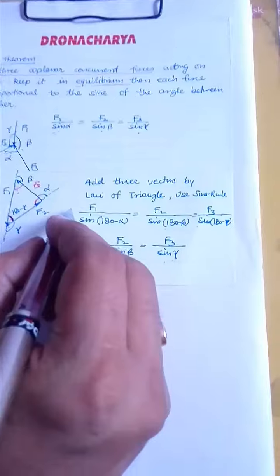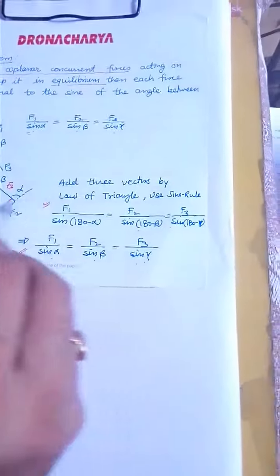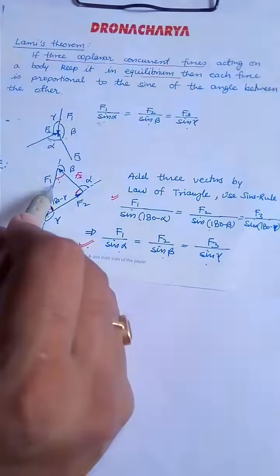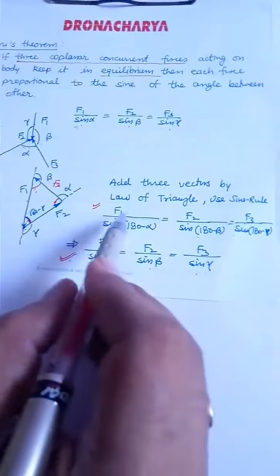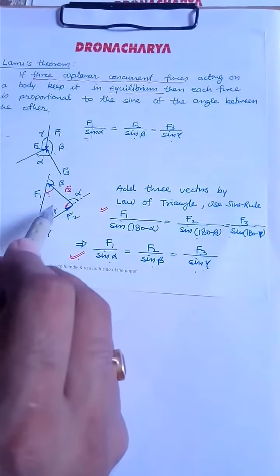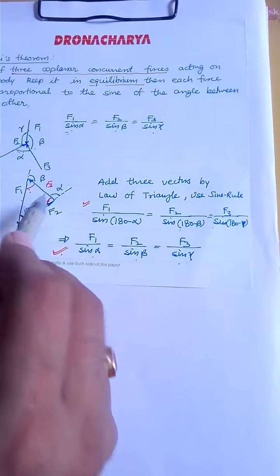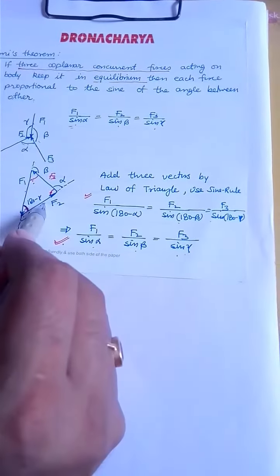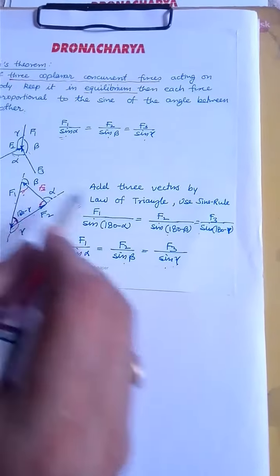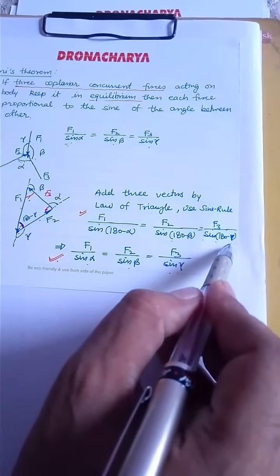Now we can simply implement the sine rule. Sine rule says the side and the corresponding sine should be proportional. So F1 upon sin(180 minus alpha) is equal to F2 upon sin(180 minus beta) is equal to F3 upon sin(180 minus gamma).